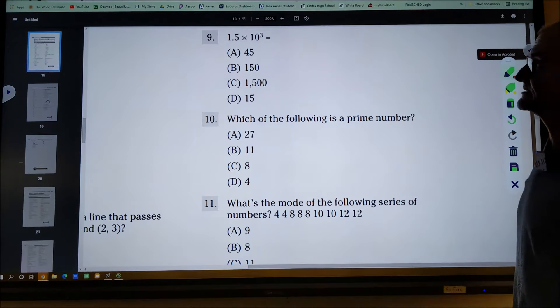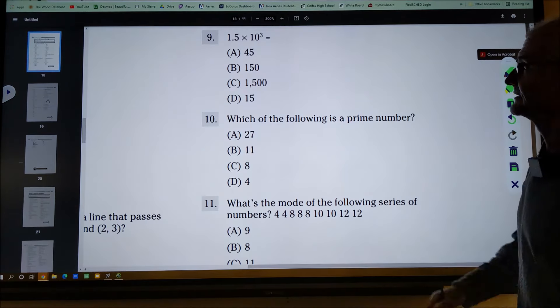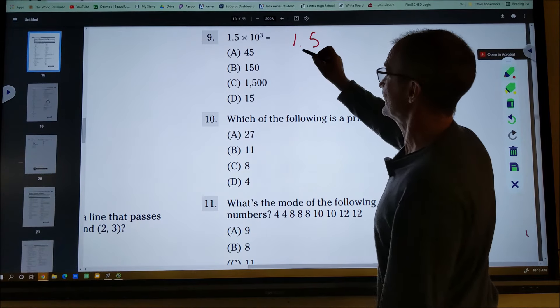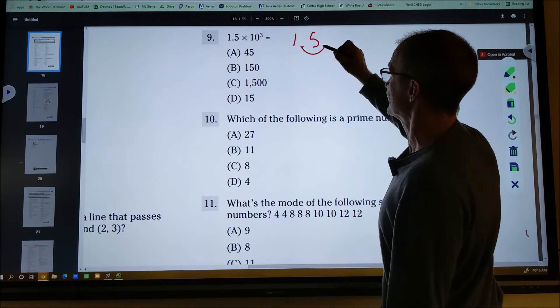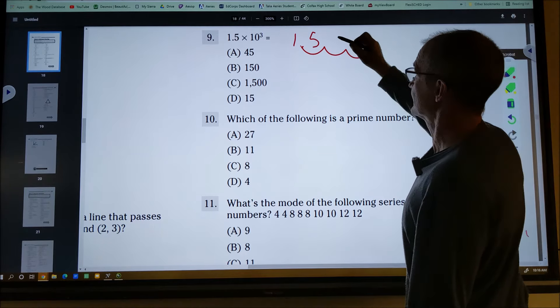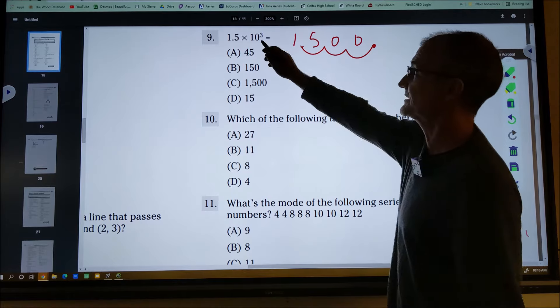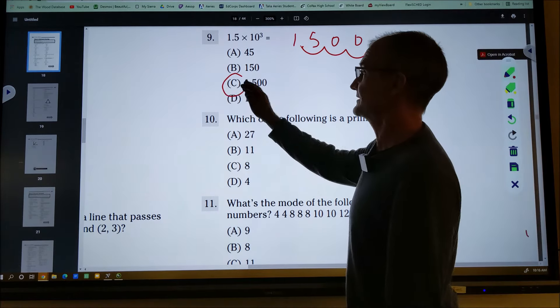Number nine, this is pretty much about place value. I could just go 1.5 times 10 to the third and move this over 1, 2, 3. I move my decimal place over 1, 2, 3. Three places was a 10 to the third and I come up with 1500.